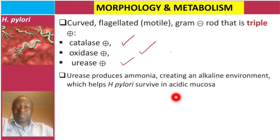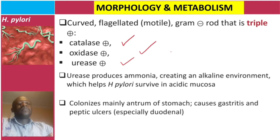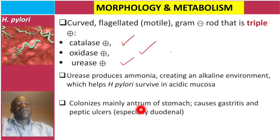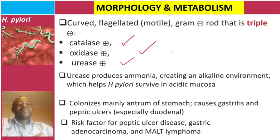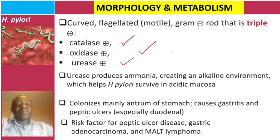The stomach has high acidity, and this bacteria colonizes mainly the antrum of the stomach, causing gastritis and peptic ulcer disease, especially in the duodenum. H. pylori is also a risk factor for peptic ulcer disease, gastric adenocarcinoma, and MALT lymphomas.